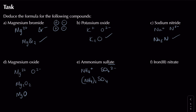For iron(III) nitrate: if you're given the oxidation state in Roman numerals, use it - iron is Fe3+. Nitrate ends in '-ate', so it's NO3 minus, not nitride. Drop and swap gives one iron and three lots of nitrate. You need brackets around the nitrate: Fe(NO3)3.